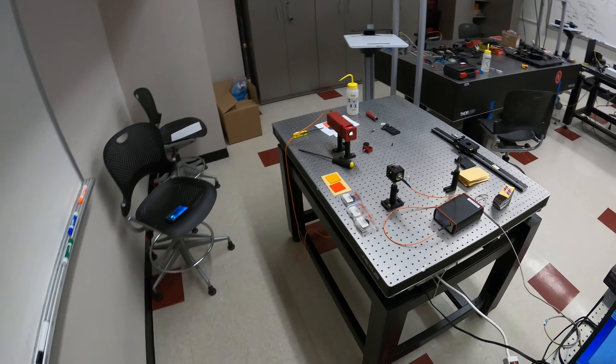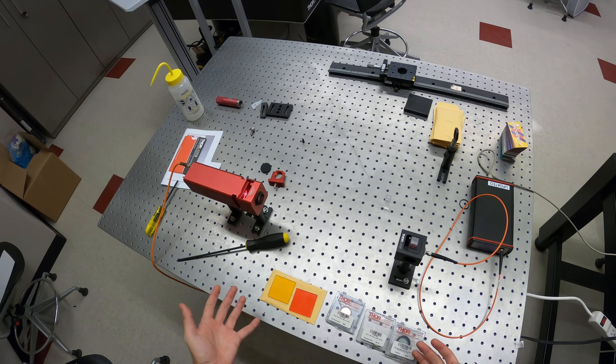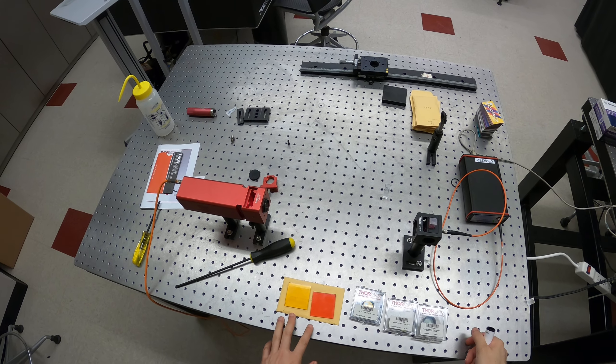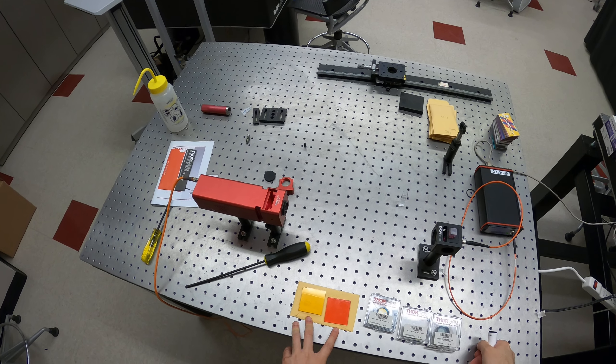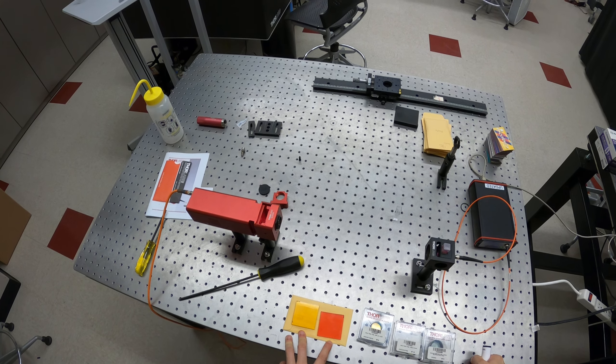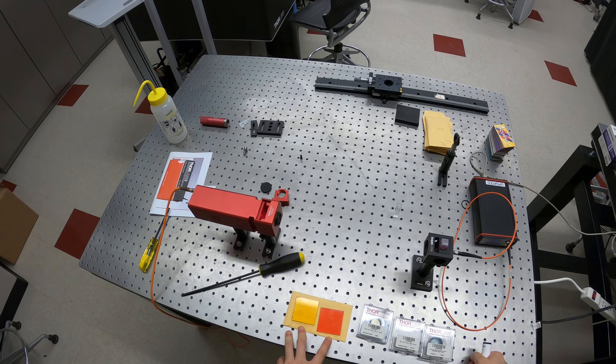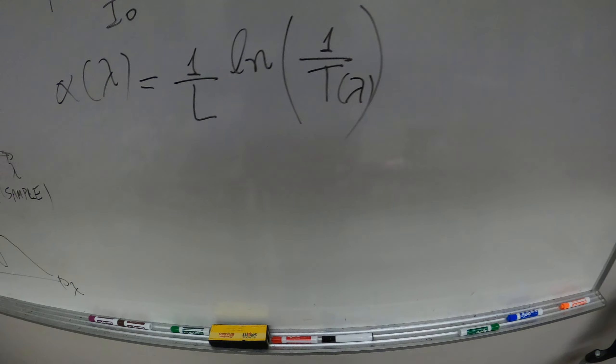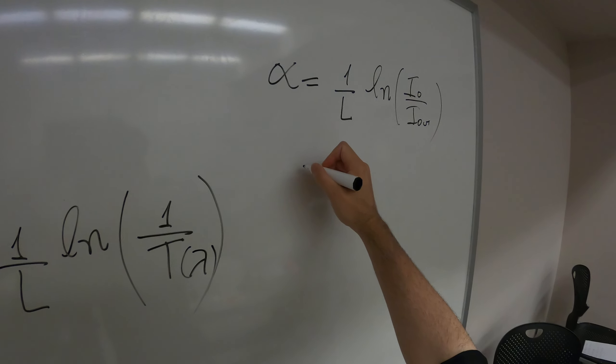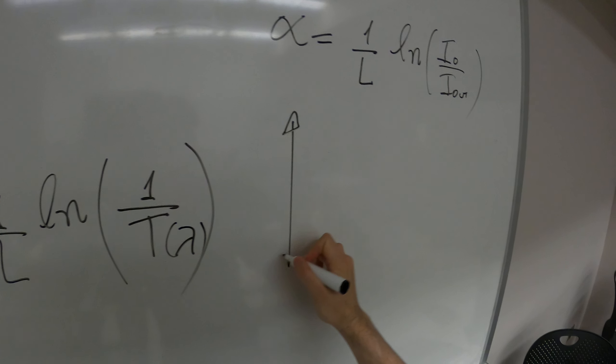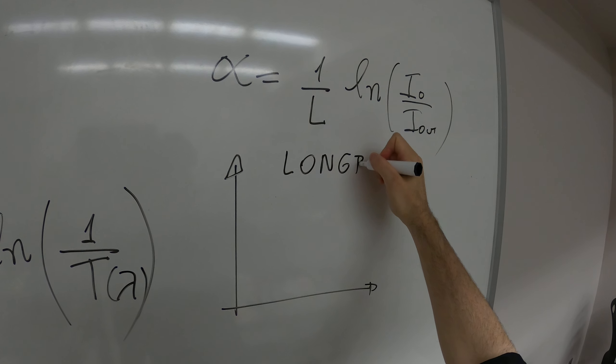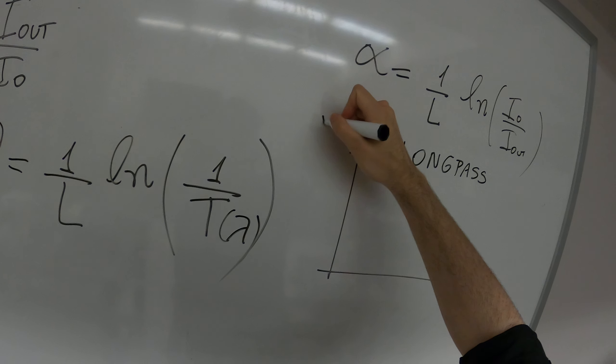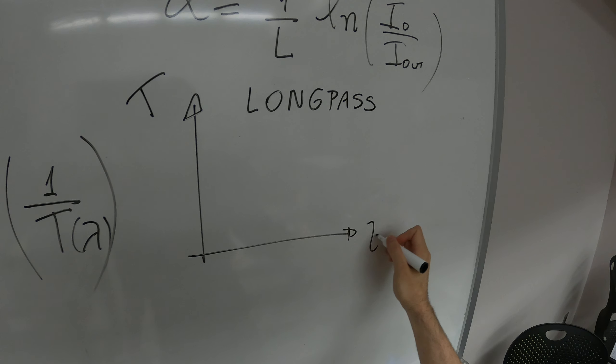We also have the optical filters. There is a long pass filter. These yellow and red filters are semiconductor doped glasses. And they are long pass, that means a long pass filter, as the name says, passes long wavelengths. If this is transmittance and this is lambda,